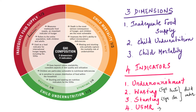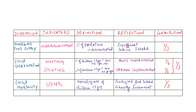Under-5 mortality rate refers to the mortality rate of children less than 5 years of age, reflecting both an unhealthy environment and inadequate food supply. Each of the three dimensions contributes one third in the calculation of the global hunger index. The first dimension, inadequate food supply, has undernourishment as its indicator — the percentage of people with insufficient calorie intake — contributing one third to the GHI.